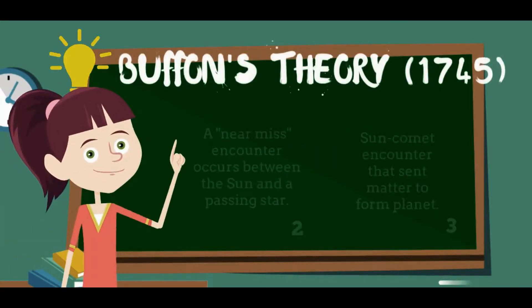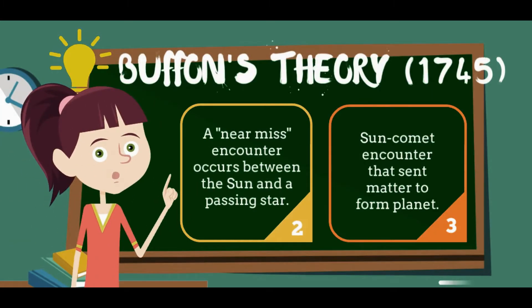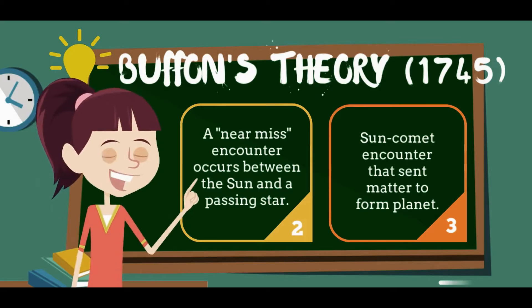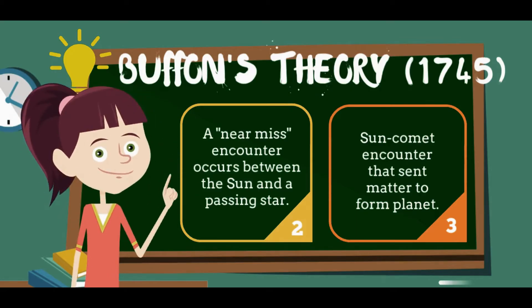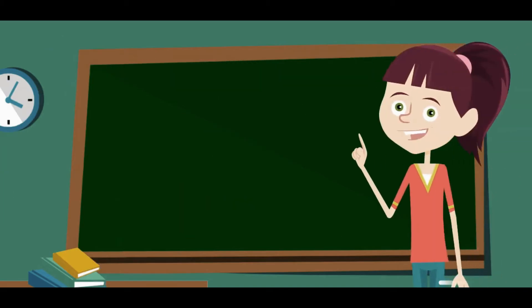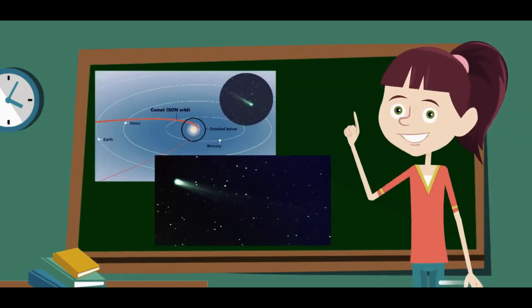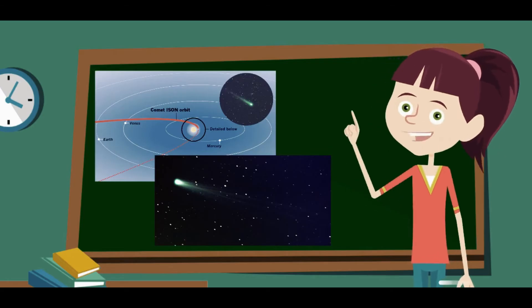According to Buffon, 1745, a near-miss encounter occurred between the sun and a passing star. In addition to this, sun-comet encounter that sent matter to form planet. Here are the illustrations how the sun comet encountered.